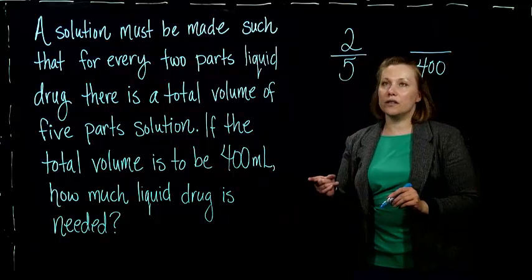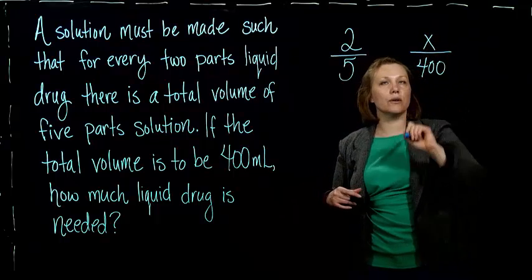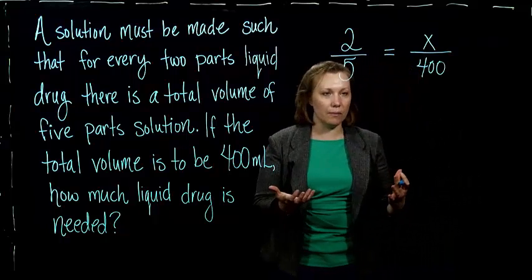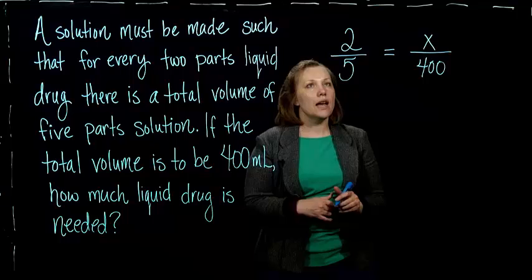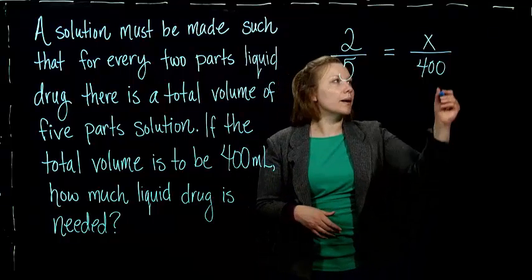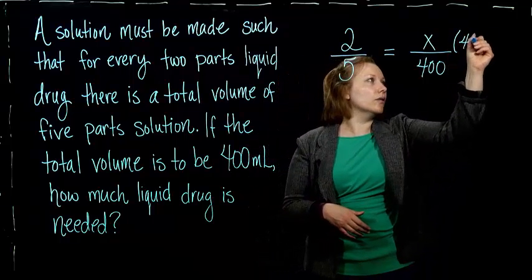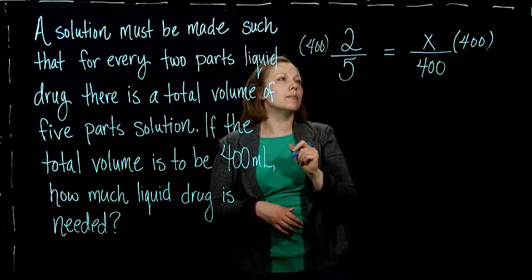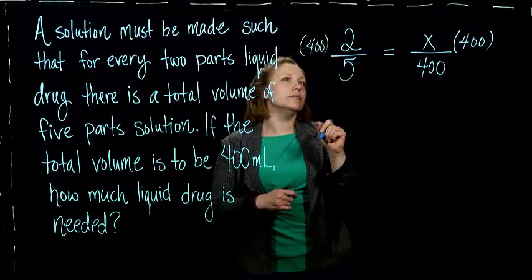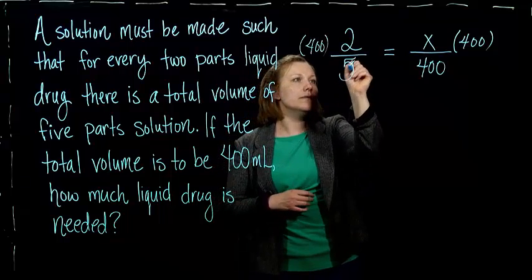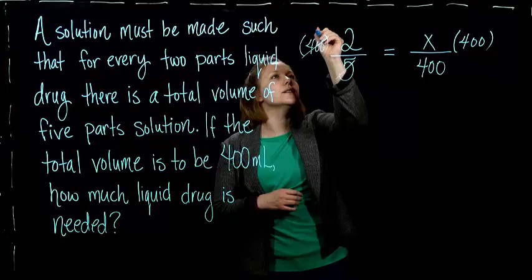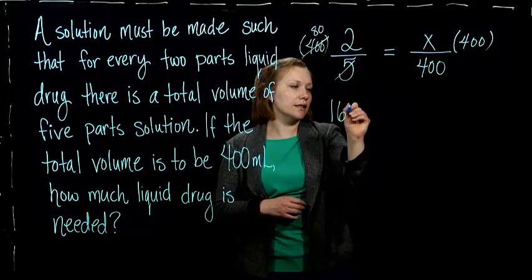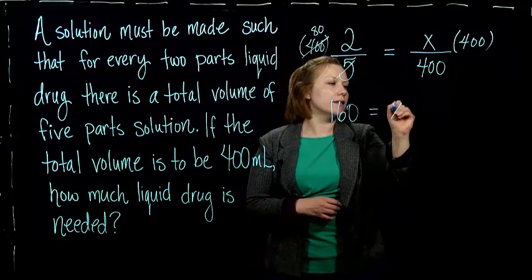And then on the top is the liquid drug, which we don't know what it is. So there we have it. We've set up our proportion. And so now all we have to do is solve it by just multiplying by 400 on both sides. The 5 goes into 400 80 times. So you end up with 160 equals x.